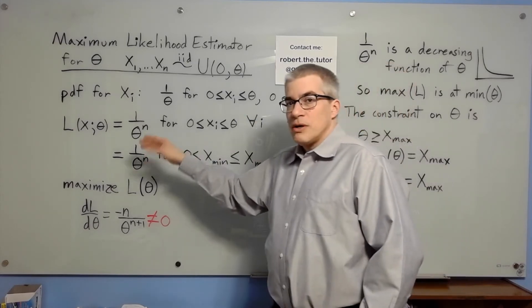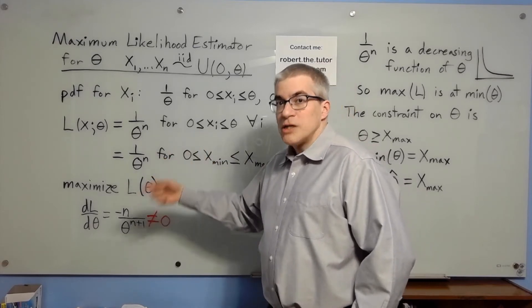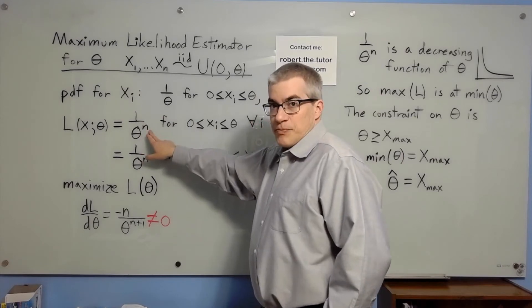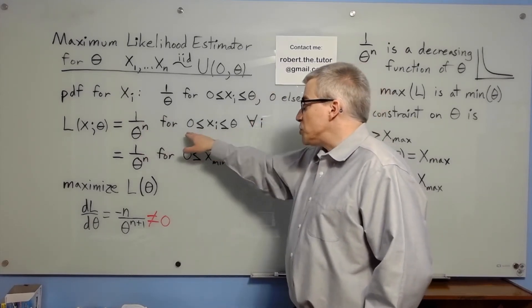The likelihood is the probability of getting all of your data. It's the PDF for x1 times the PDF for x2, etc. So we get 1 over theta to the n for all xi's between 0 and theta.